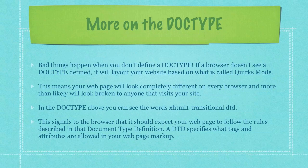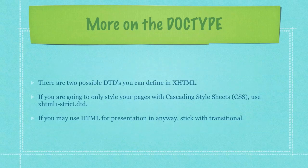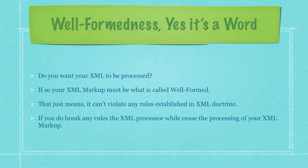A DTD specifies what tags and attributes are allowed in your webpage markup. There are two possible DTDs you can define in XHTML. If you're going to only style your pages with cascading style sheets, use the XHTML Strict DTD. If you may use HTML for presentation in any way, stick with Transitional.